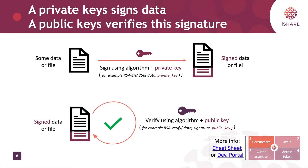So how does signing and encryption work? Let's say we have some data or file. We can use an algorithm and the private key to sign this data or file. For example, the RSA algorithm will take the data and the private key and output a data with a signature at the end. Now remember that this private key belongs to a certificate of which the owner is known. If you receive this signed data or file, you can verify using the algorithm and the public key that this document was indeed signed by the private key. In such a way you can verify that the document was sent by somebody who owns the private key and you can use the public part of the certificate to verify their identity.